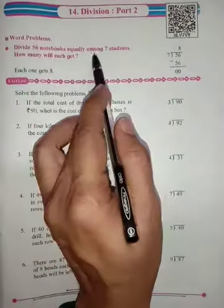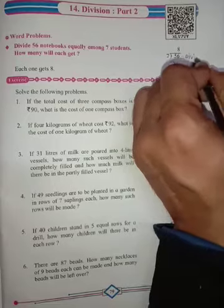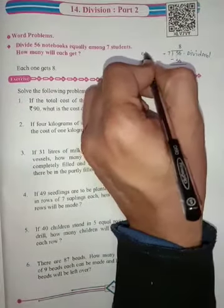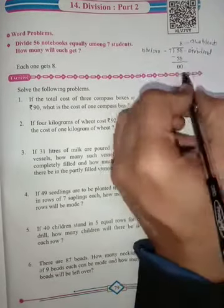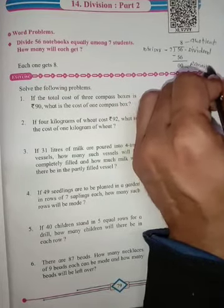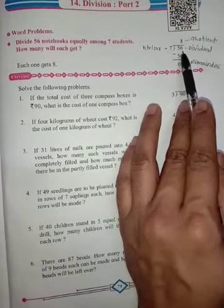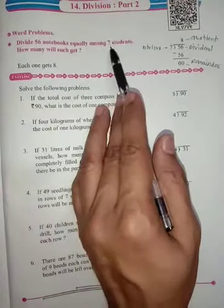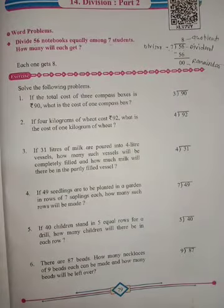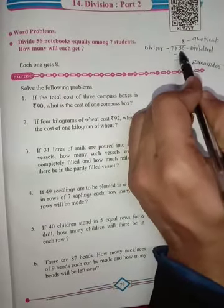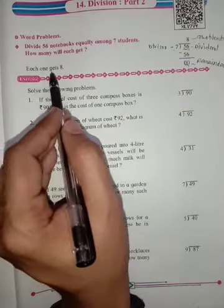Divide 56 notebooks equally among seven students. How many will each get? So it is the division of 56 by 7. 56 is the dividend, 7 is the divisor, this is quotient, and this is remainder. 56 comes in the seven times table - seven eights are 56.